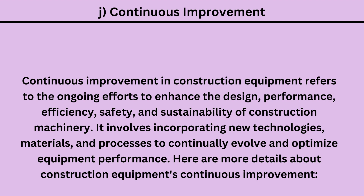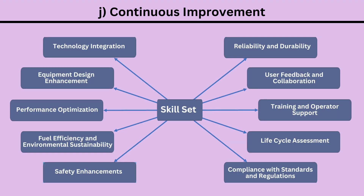Here are more details about construction equipment continuous improvement: 1. Technology integration. 2. Equipment design enhancement. 3. Performance optimization. 4. Fuel efficiency and environmental sustainability. 5. Safety enhancements. 6. Reliability and durability. 7. User feedback and collaboration. 8. Training and operator support. 9. Life cycle assessment. 10. Compliance with standards and regulations.